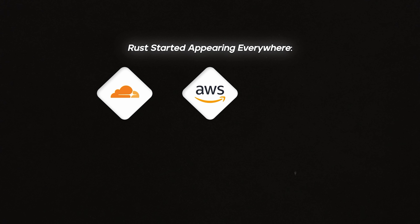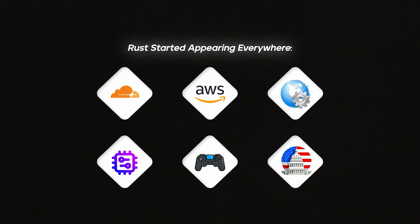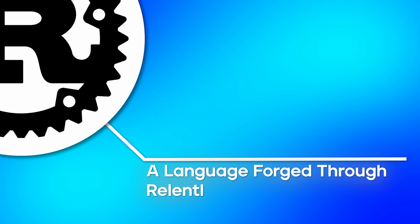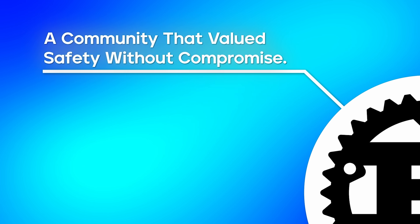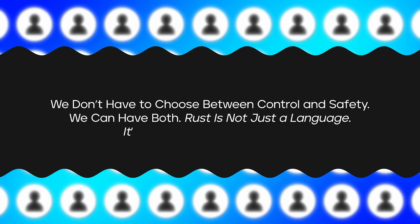Rust started appearing everywhere — at Cloudflare, at AWS, in web services, kernels, and games. Even the U.S. government endorsed memory-safe languages like Rust. But Rust's story isn't about hype. It's about persistence — a language forged through relentless refinement, a community that valued safety without compromise. From a lone Mozilla engineer's dream to a global movement, Rust has proved one thing: we don't have to choose between control and safety. We can have both. Rust is not just a language. It's how things ought to work.